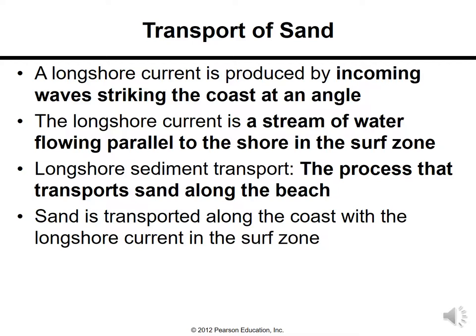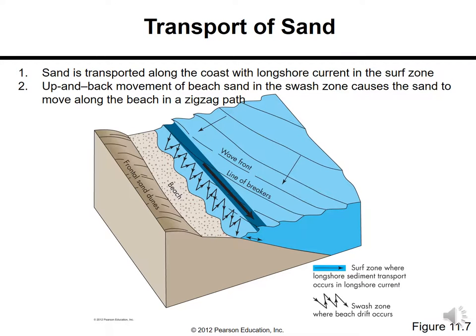A longshore current is produced by incoming waves striking the coast at an angle. It is a stream of water flowing parallel to the shore in the surf zone. Longshore sediment transport is the process that transports sand along the beach with the longshore current in the surf zone. In this picture, the dark arrow shows the surf zone where longshore sediment transport occurs in longshore currents, with viewpoints, line of breakers, and the beach visible.